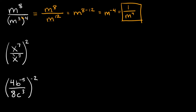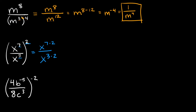Here we have x to the seventh over x cubed in parentheses, and that whole thing is raised to the second power. Before combining, we have to simplify the top and the bottom by applying the outer exponent. Whenever you have an exponent raised to another exponent, you just multiply them together — so we multiply each of these exponents by 2.